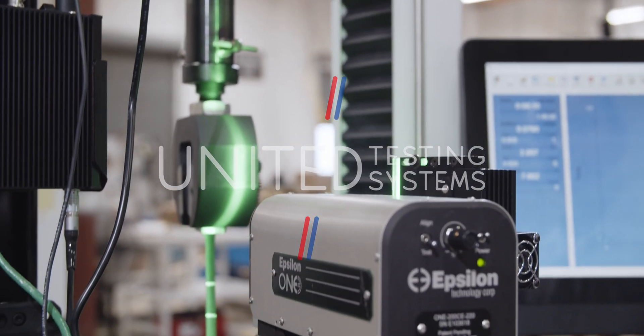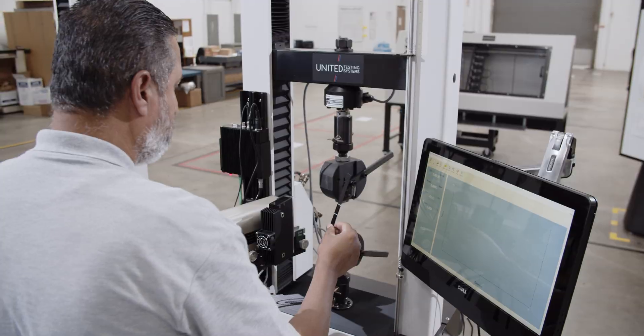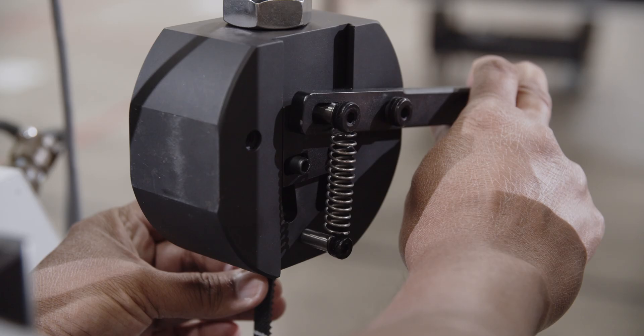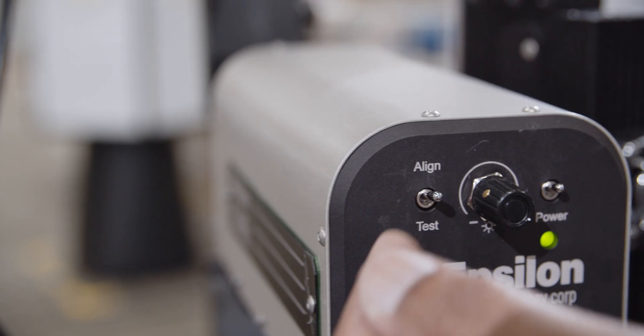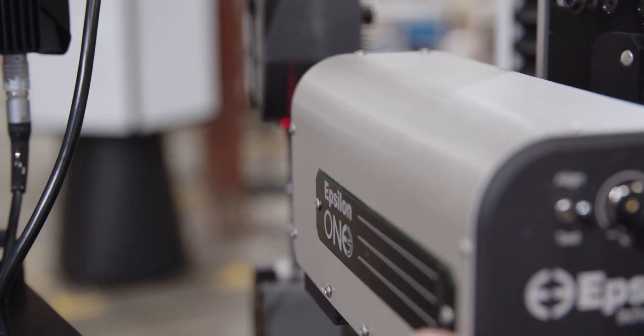United Testing Systems is pleased to offer the most advanced strain measurement system on the market today, the Epsilon 1 series of non-contacting optical extensometers.